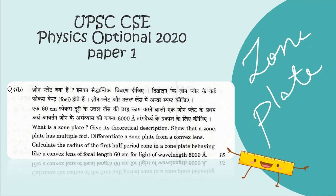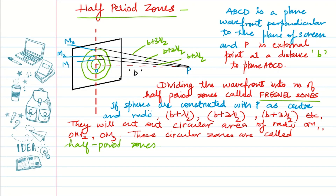Hello everyone. In today's video we will be seeing this question from the year 2020 physics optional paper one. In this question we will talk about zone plate and its theoretical description, and we will show that the zone plate has multiple foci. We also have to differentiate between a zone plate and a convex lens, and there's a numerical. Let's start.